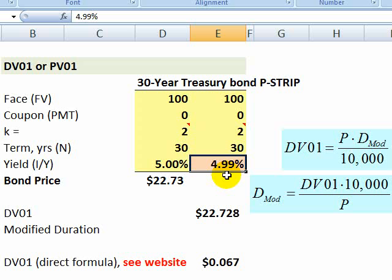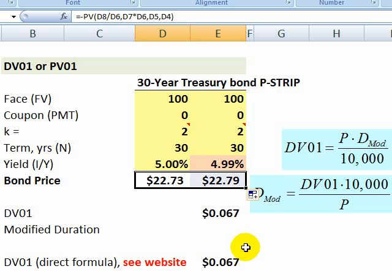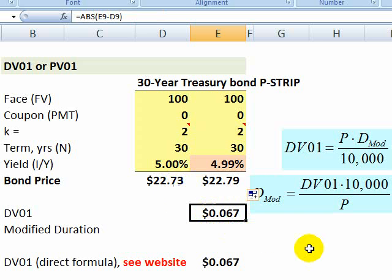And all I've done is basically shock the yield down by 1%. So I can just copy this formula over, and notice if my yield goes down by one basis point, my bond price should go up just a little bit. And specifically, look how easy this is. We just take the difference, or really the absolute value of the difference, of the bond prices. In this case, it's about almost 7 cents, 0.067. This is the dollar value of the zero, or the price value of the basis point.